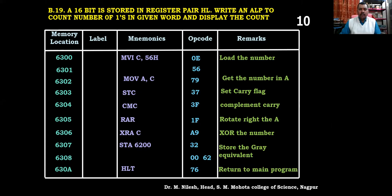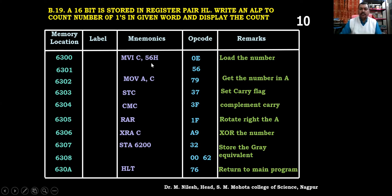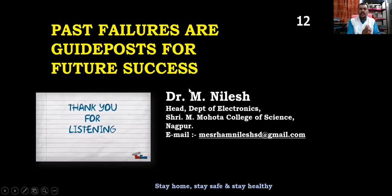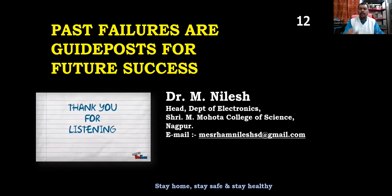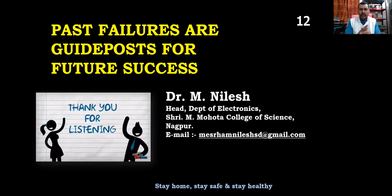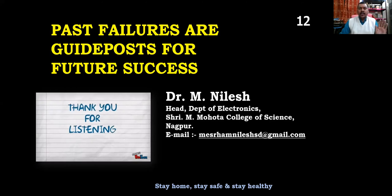I guess you have understood this program. We moved 56H into register C, copied it to accumulator, used STC then CMC to clear carry, rotated right with RAR, then XOR'd with register C using XRA C, and stored the result in 6200 with STA. You can execute this and try it yourself. If you have any problem, ask me in the next lecture. Thank you very much for listening. Stay home, stay safe, take care. Good day. See you soon. Bye.